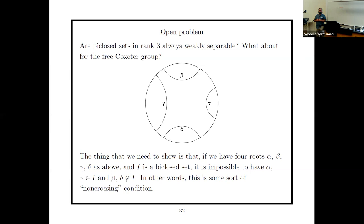Open problem: verify the bi-closed set conjecture for rank-3 hyperbolic Coxeter groups, starting with the free Coxeter group of rank 3. This is essentially the modular group Γ(2), deeply connected to number theory, continued fractions, and Farey sequences. The key thing to prove is a non-crossing property: for four hyperbolic lines α, β, γ, δ arranged cyclically with no mutual intersections, a bi-closed set cannot contain α and γ but not β and δ.